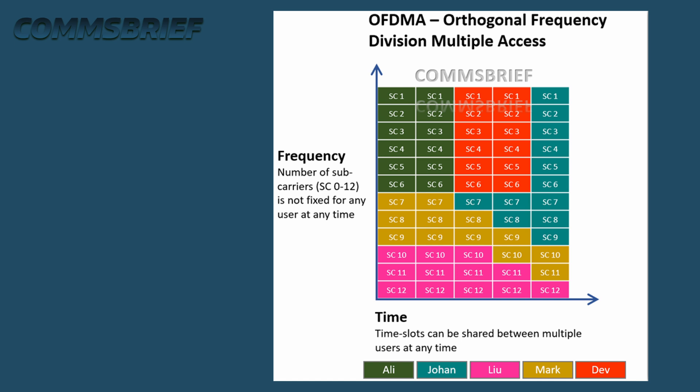OFDMA uses both time and frequency domains flexibly to allocate sub-carriers and time slots more dynamically. As shown in the simplified diagram, mobile phone users in LTE can be assigned a specific number of sub-carriers for a particular time duration, depending on their data needs.